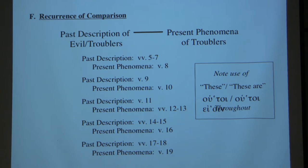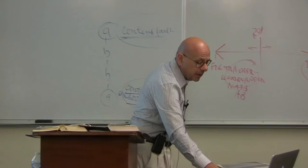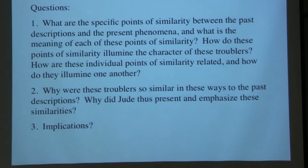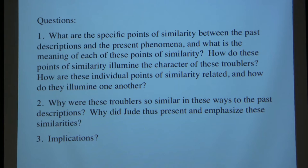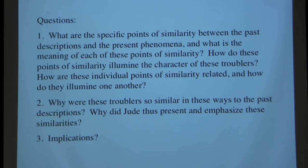We raise questions with regard to this. What are the specific points of similarity between the past descriptions and the present phenomena, and what is the meaning of each? How do these points of similarity illumine the character of these ungodly ones presently in their midst? How are these individual points of similarity related to one another and how do they illumine one another? Rational questions: why were these ungodly so similar in these ways to the past descriptions? Why did Jude present and emphasize these similarities, and what are the implications?